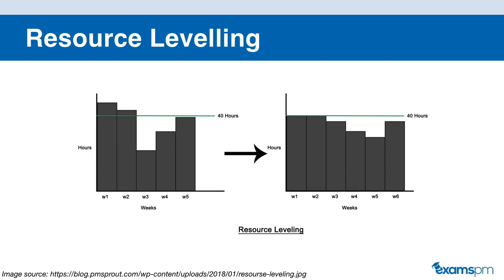Although this is feasible on paper, in reality it is not as feasible. So what happens is that by using resource leveling, you're extending the schedule. Instead of completing this project in five weeks, you're completing it in six weeks in order to account for the fact that your workers can't work more than 40 hours per week.